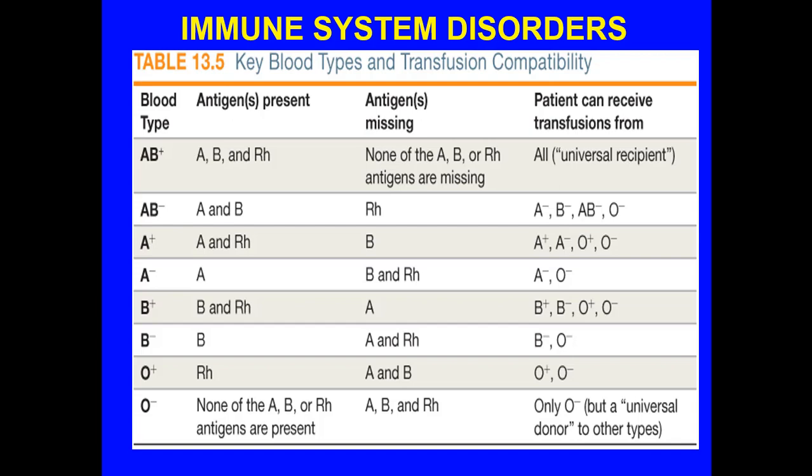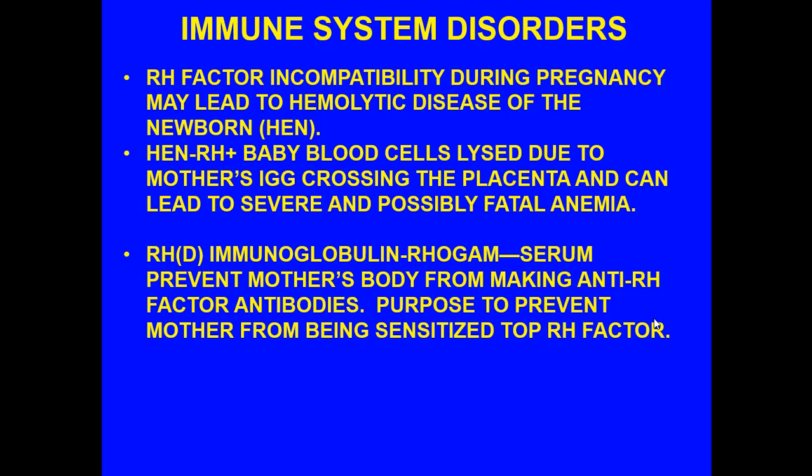For blood transfusion compatibility — if you're B positive, you should get B positive blood, though B negative is also acceptable. Type AB positive is the universal recipient — having no antibodies against A, B, or Rh. Type O negative is the universal donor. You should always try for an exact match — B negative to B negative, and so on.